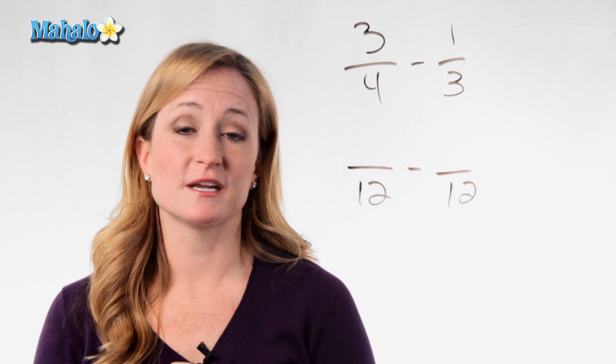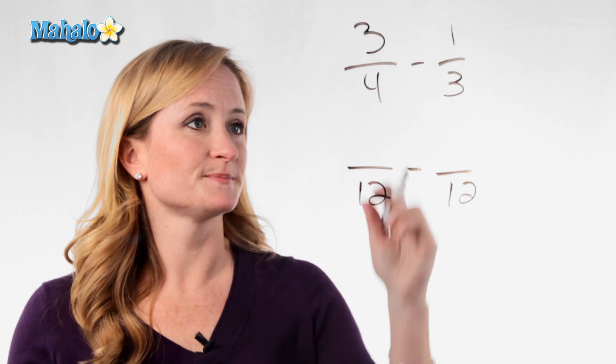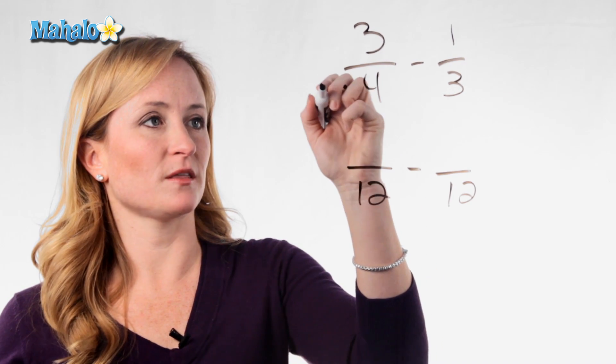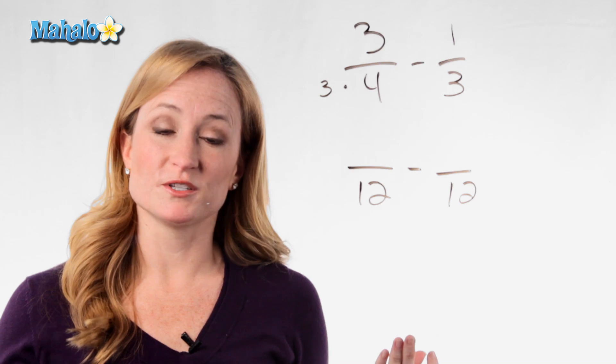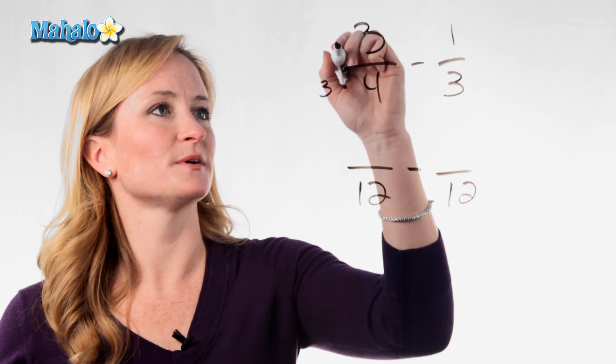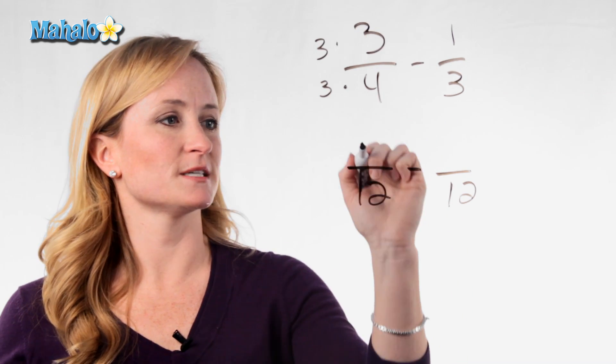So write down your denominator and figure out how you got there. How did this 4 become a 12? We multiply it by 3. So what you do to the bottom, you must do to the top. So 3 times 3 is 9.